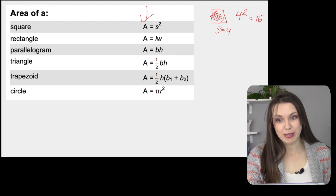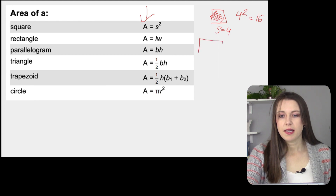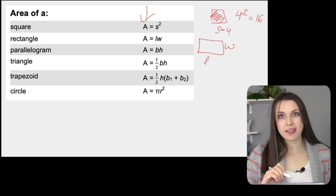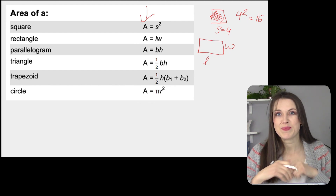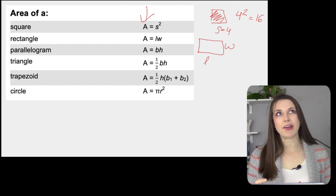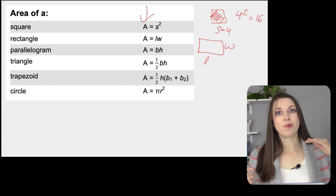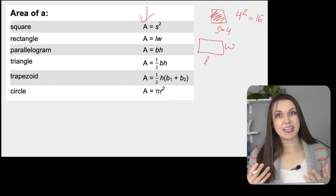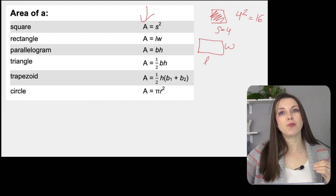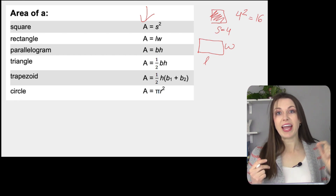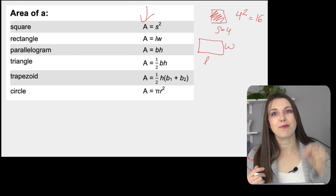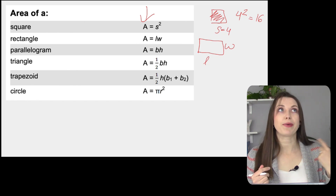Rectangle is very similar, except it is length times width. I'm going to take the length — the bottom — times one of the sides, and then I'll have my answer. One thing I like to do is think of area like grass. Imagine I have a piece of property and I want to put grass on it. I take the length of the property times the width, multiply those together, and I'll have how much grass I need. Remember, area is the grass.